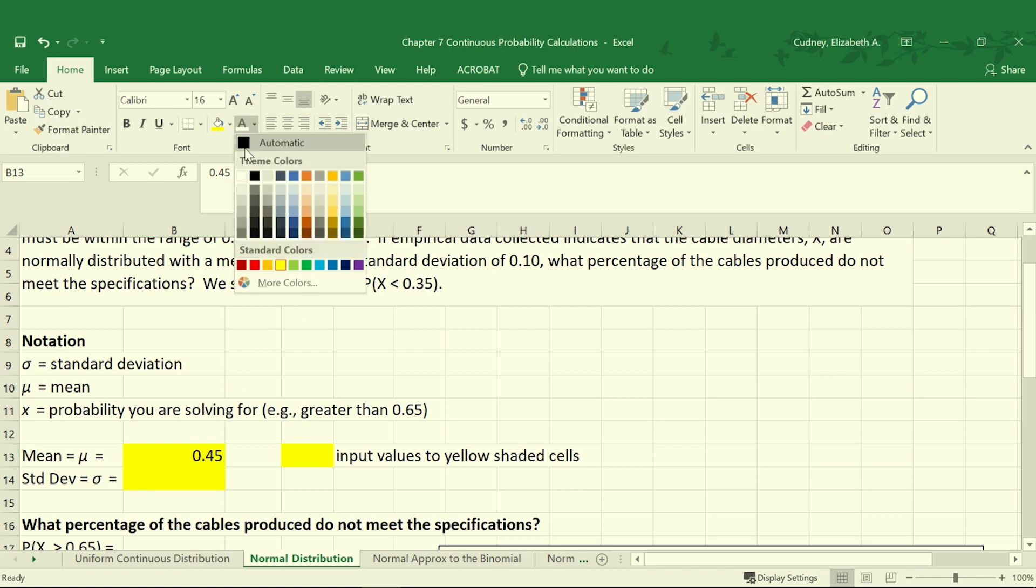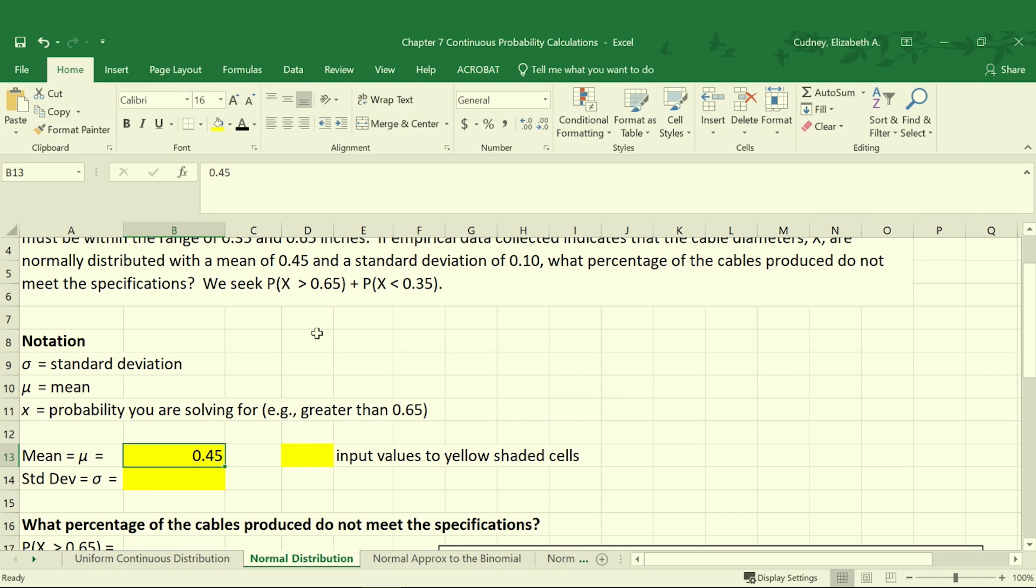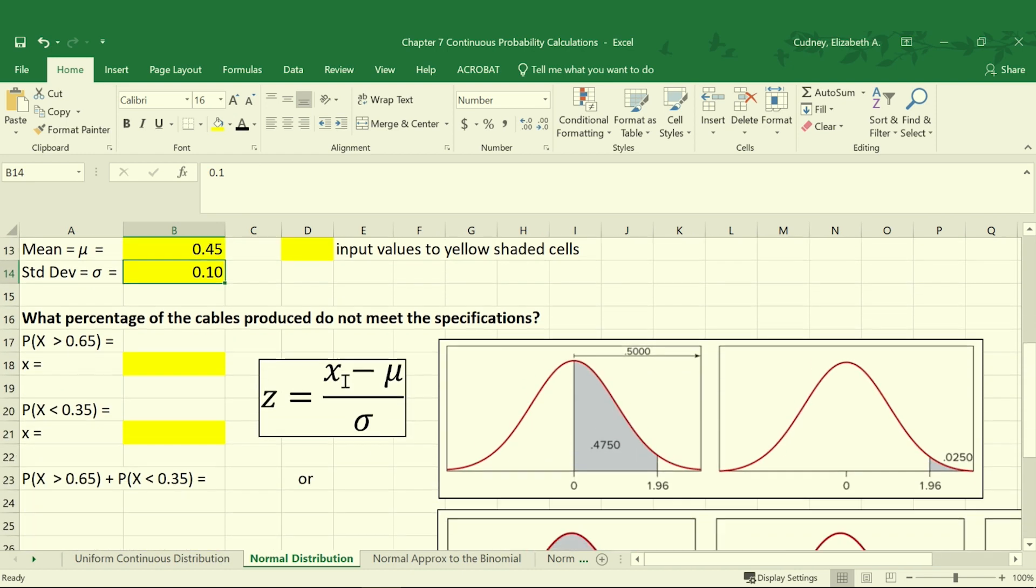Our mean that was given to us is 0.45. Our standard deviation that was given to us is 0.1. Using this information, we can solve, using our z equation, for the probability that a value is greater than 0.65 and less than 0.35.